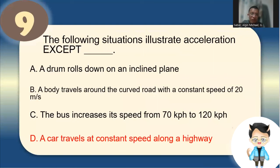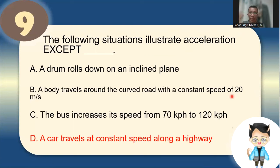Number 9: The following situations illustrate acceleration, except which? Acceleration means change in magnitude or direction of velocity. Letter A — drum rolls down an inclined plane: increasing velocity, so acceleration. Letter B — body travels around a curve at constant speed: change in direction, still acceleration. Letter C — speed increases from 70 to 120 kph: change in magnitude, still acceleration. So the answer is letter D: a car traveling at constant speed along a highway.